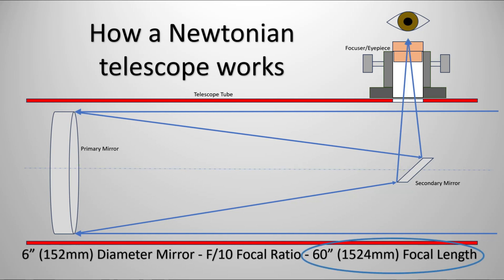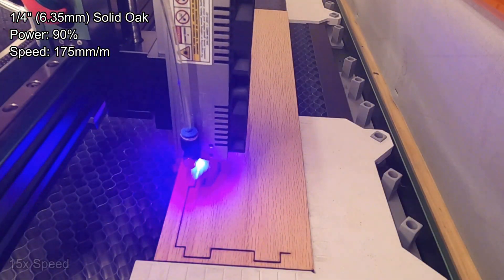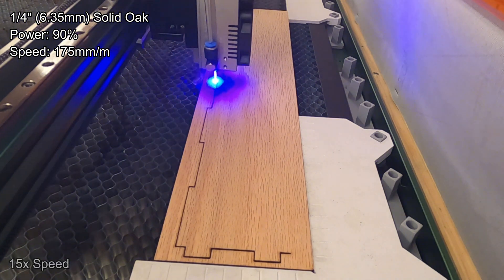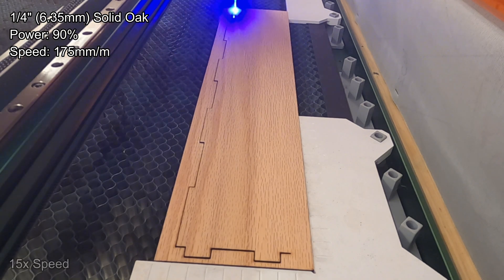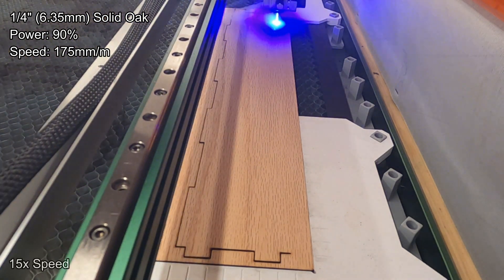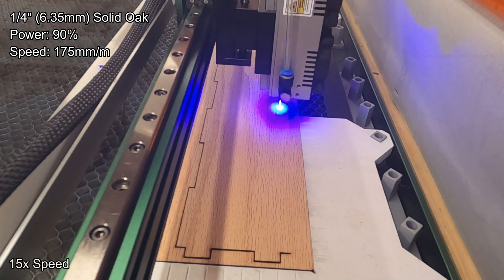Configuring this light path is about the only math you need to know when building this type of telescope. The distance from the front face of the primary to the center of the secondary, plus the distance from the secondary to the top of the eyepiece at the center of the focus travel, needs to match the focal length. For my tube assembly, I decided to use quarter inch by three and a half inch solid oak wood planks.